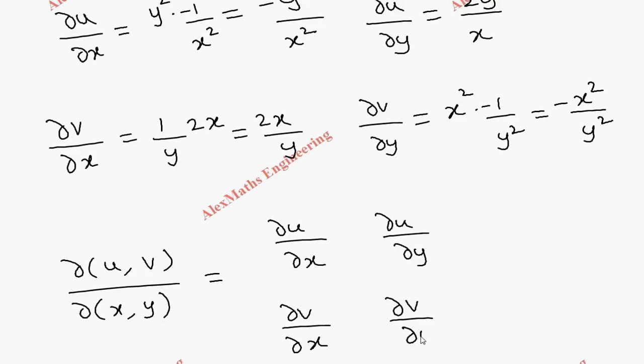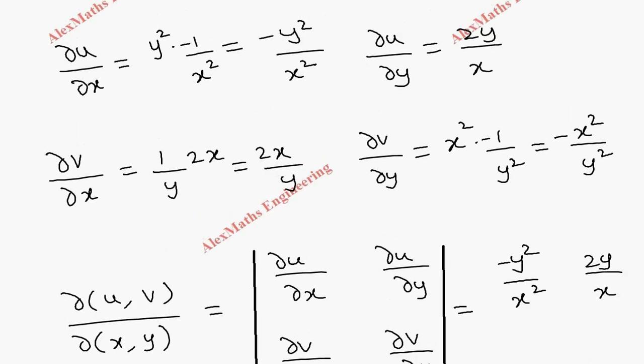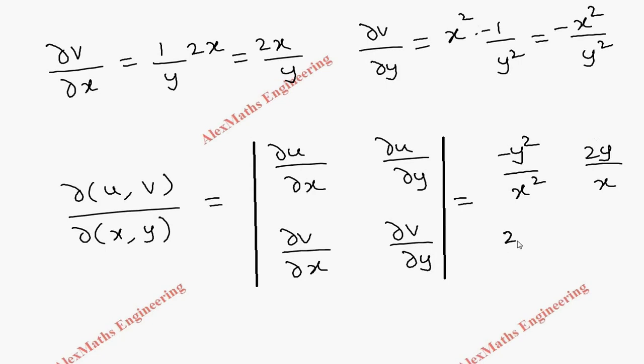Now we substitute the values. The first element is -y²/x², then the second element ∂u/∂y is 2y/x. In the second row we have 2x/y and -x²/y². So we got the determinant which we are going to evaluate.